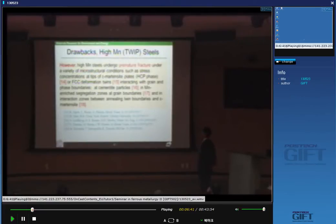High manganese steels undergo premature fracture in a variety of microstructure conditions, such as stress concentration at tips of epsilon-type martensite plates, which is the HCP phase, FCC deformation twins, intersecting and interacting with grain and phase boundaries, at cemented particles, and in manganese enriched segregation zones at the grain boundaries, and in interaction zones between annealing twin boundaries and epsilon-type martensite.